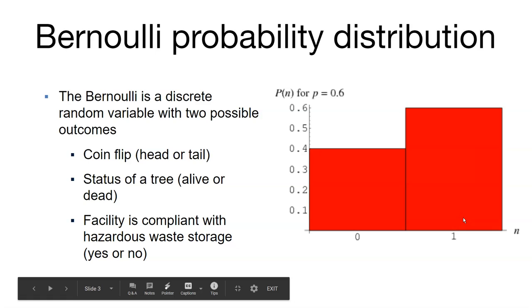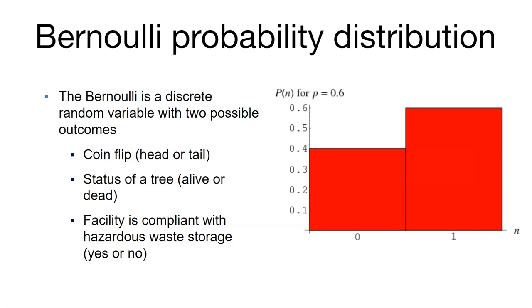We're going to start by talking about the Bernoulli and the binomial distribution. The Bernoulli distribution is a very unique one. It is a discrete random variable that has two possible outcomes.